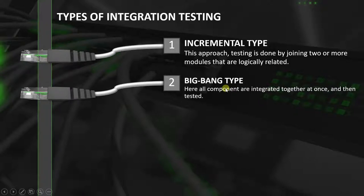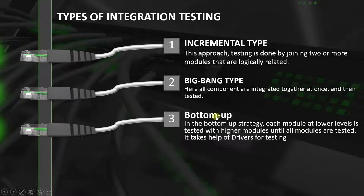Now, on big bang type of testing, there are two variations. The first is the bottom-up strategy. In this strategy, each module at lower levels is tested with higher modules until all modules are tested. That last line isn't very important, but this part is: each module at lower levels is tested with higher modules until all modules are tested.